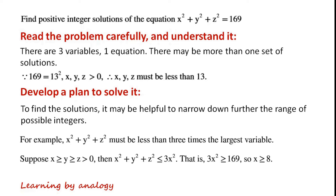Suppose x is greater than or equal to y, y is greater than or equal to z, z is greater than zero. Then x squared plus y squared plus z squared is less than or equal to 3x squared, that is to say 3x squared is greater than or equal to 169.